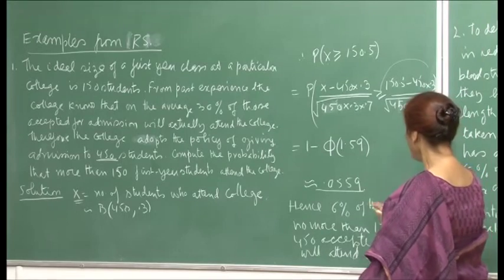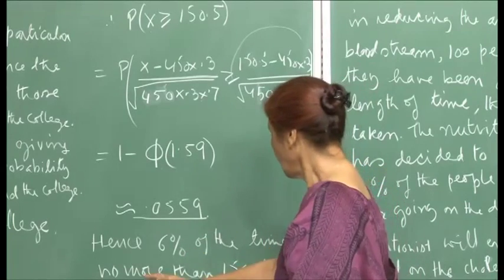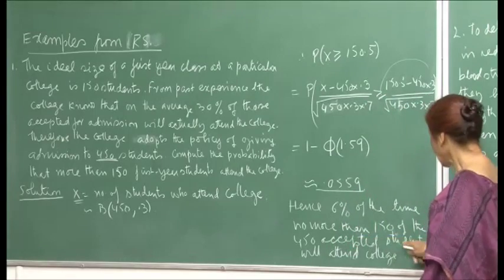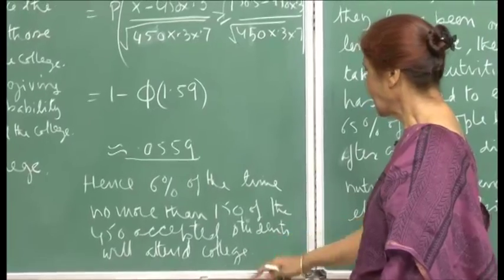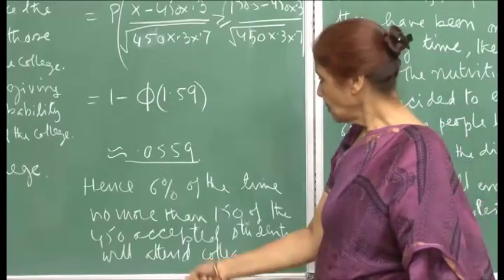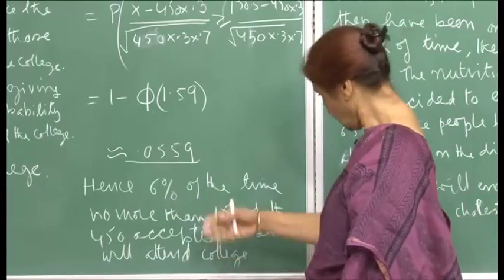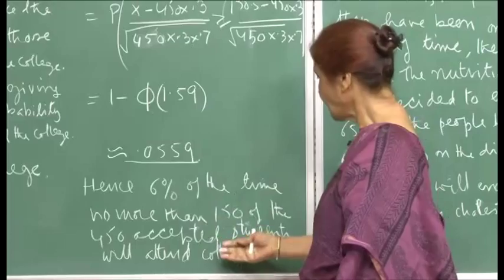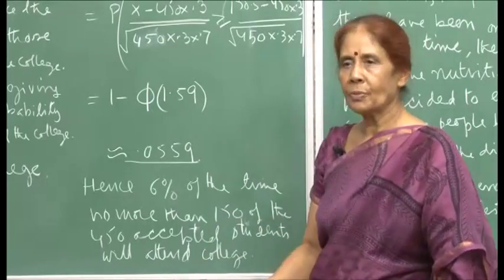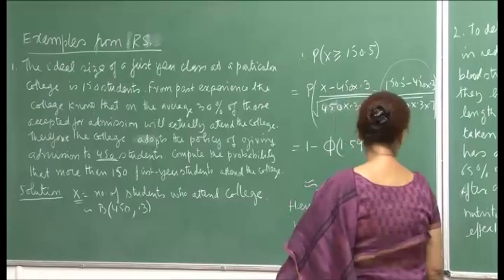Hence, there is about a 6 percent chance that more than 150 of the 450 accepted students will attend college. The college is in a good situation, because it is only a 6 percent chance that more than 150 people will actually come.